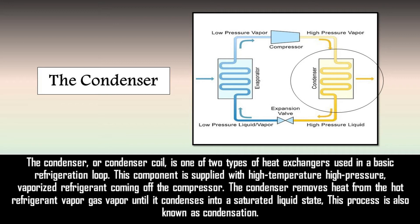Next is the condenser. The condenser or condenser coil is one of the two types of heat exchangers used in a basic refrigeration loop. This component is supplied with a high temperature, high pressure vaporized refrigerant coming off the compressor. The condenser removes heat from the hot refrigerant vapor, gas vapor until it condenses into a saturated liquid state. This process is also known as condensation.